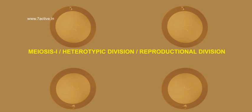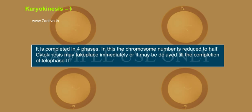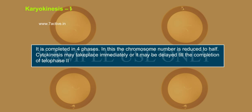Meiosis 1, also called Heterotypic Division or Reproductional Division. Karyokinesis 1 is completed in four phases, in which the chromosome number is reduced to half. Cytokinesis may take place immediately or it may be delayed till the completion of Meiosis Phase 2.